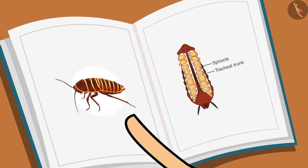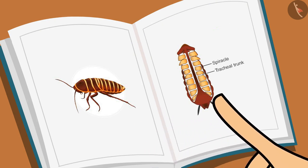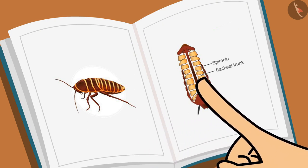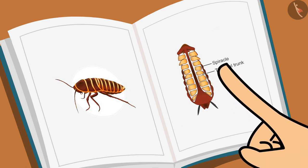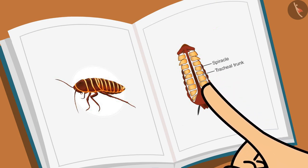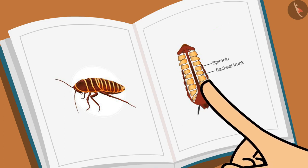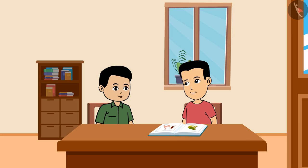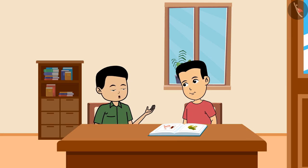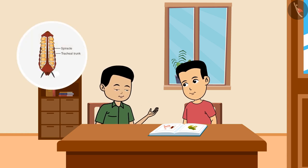They read that, like all other insects, cockroaches have small holes on the sides of their bodies called spiracles. Oxygen enters through these spiracles and carbon dioxide comes out. The air from these holes then travels through tracheal tubes throughout the entire body.